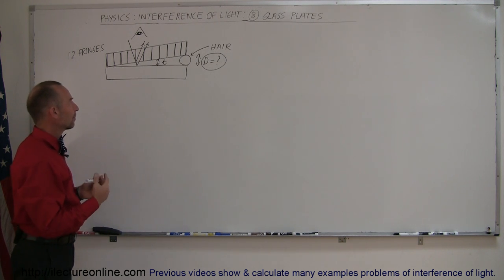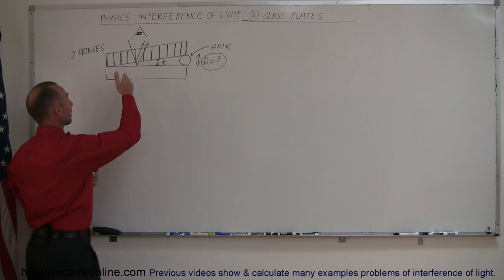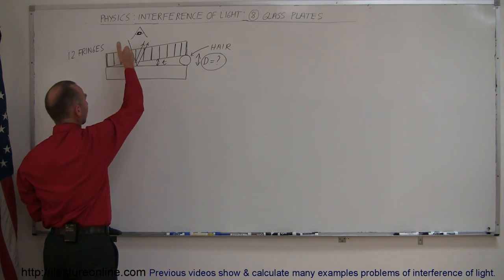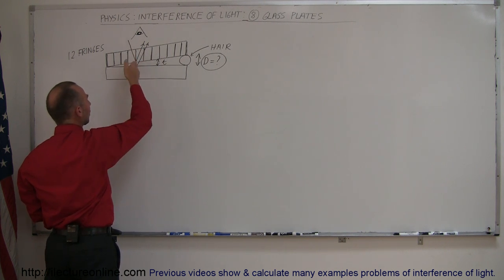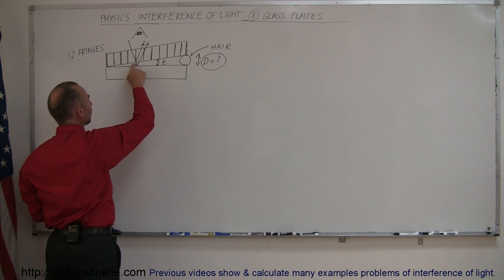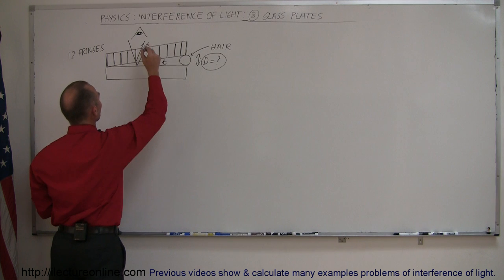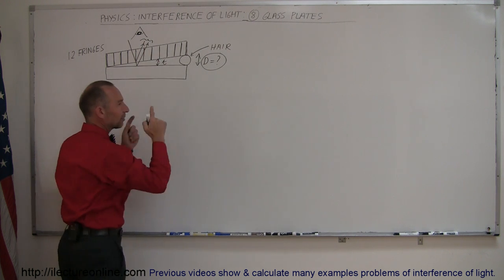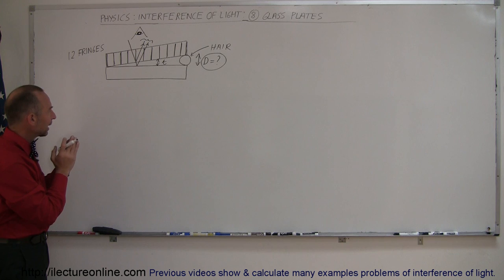We have kind of the same phenomenon as we see with a thin film. Light will go through the first glass plate, reflect off the top boundary between the plate and air. Some will go through and reflect off the boundary between the air and the second glass plate and get reflected back. The observer will see the result of those two rays coming back — we're only looking at those two particular reflections.